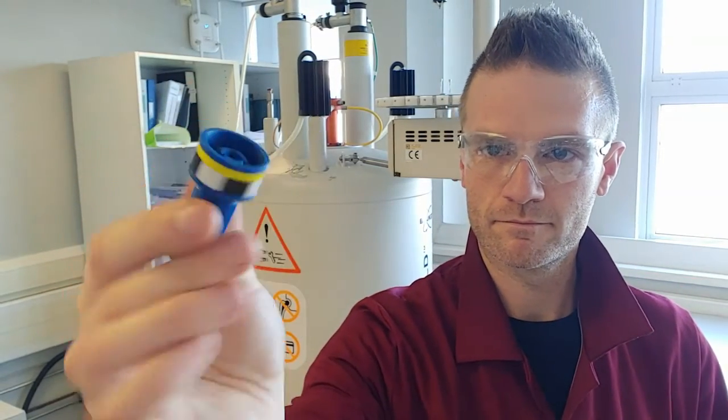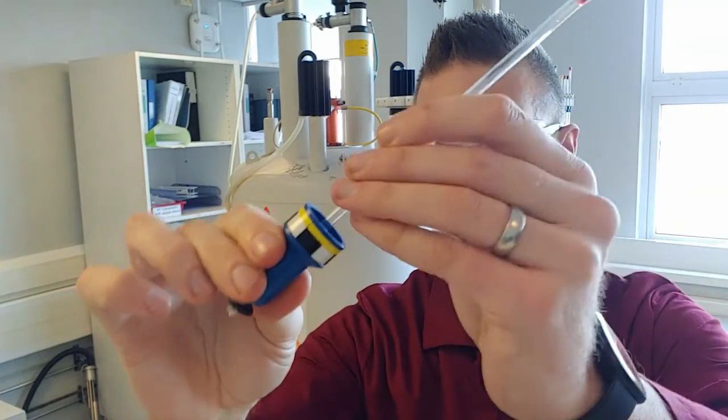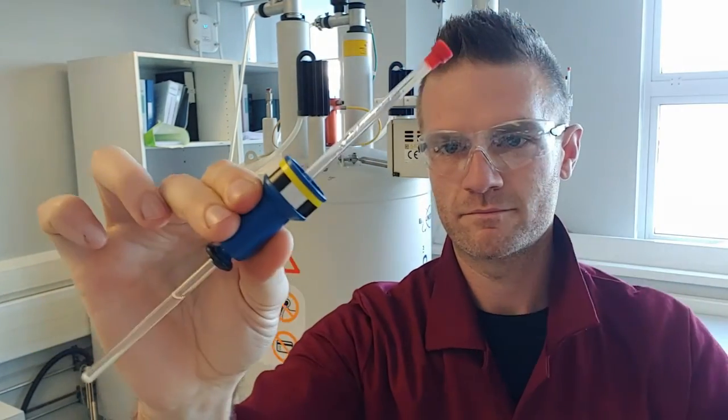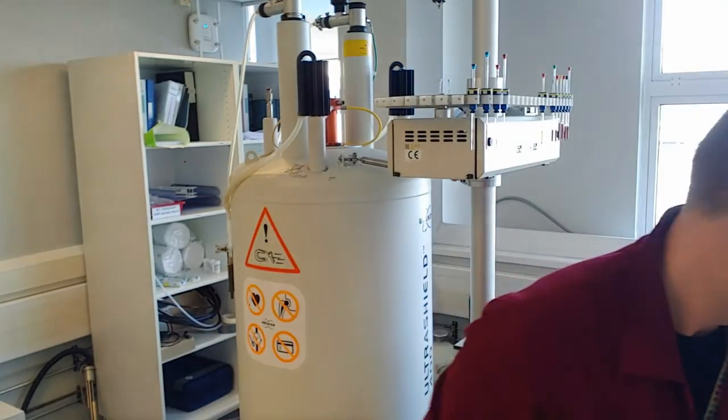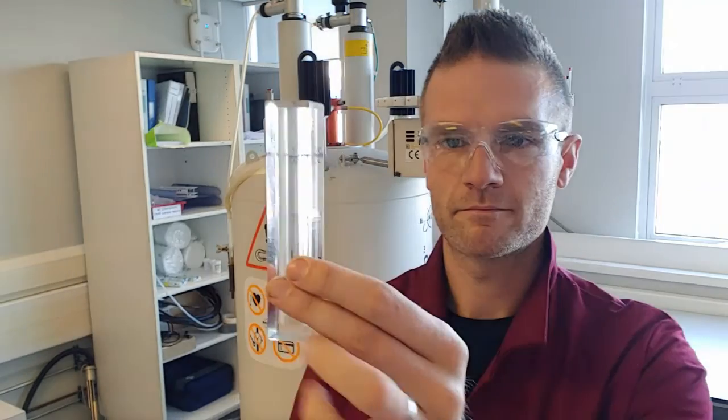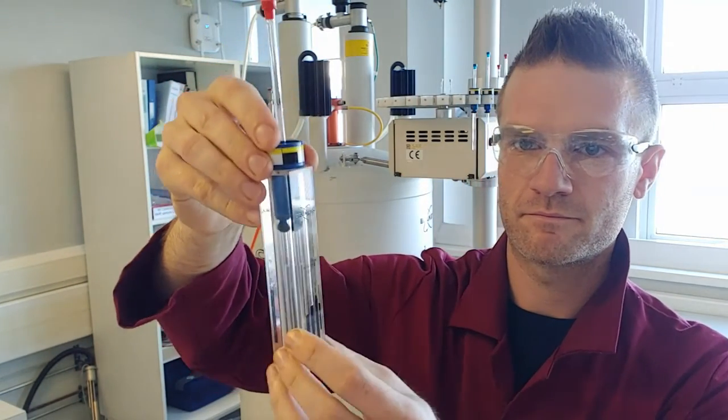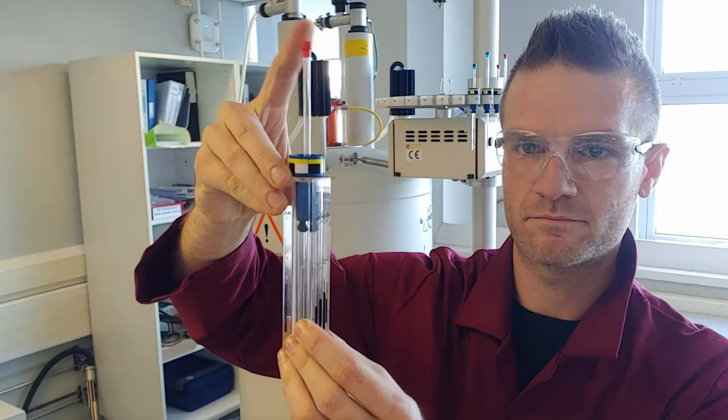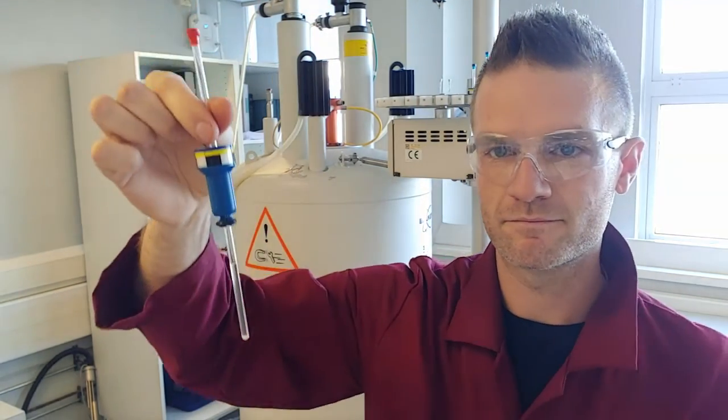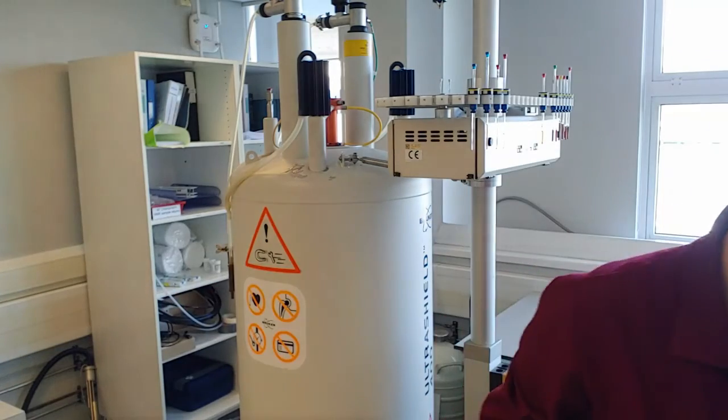So the first thing we need is a spinner so this is basically a sample holder that's going to allow the sample to spin and you place the sample tube into the spinner. You then get a depth gauge and you press the spinner and the sample tube into it to ensure that the sample is at the right height so that it's sitting in the middle of those coils that we saw in the previous diagram.